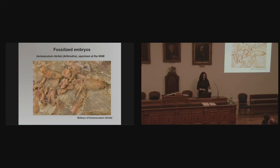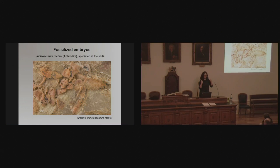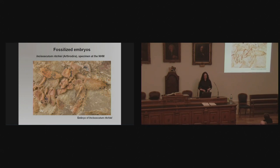Now that we know placoderms can have embryos, we re-examined them. These bones are very well preserved — that's a complete plate, a complete piece of bone. You'd expect if this pile of bones had been the last meal, they might have been more crunched up, more broken up, but we don't see that. These bones represent an embryo, a very small specimen of Incisoscutum. We know it's a small specimen because it shows typical early ontogenetic features — the sensory canals in very small placoderms are deeply incised into the bone, different from adults. There are also proportionally larger foramina. And if this had been a meal, you'd expect other food items in the stomach region, but we only see this accumulation of bones.